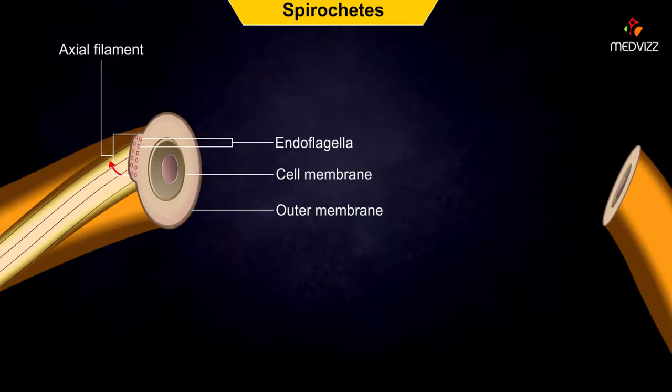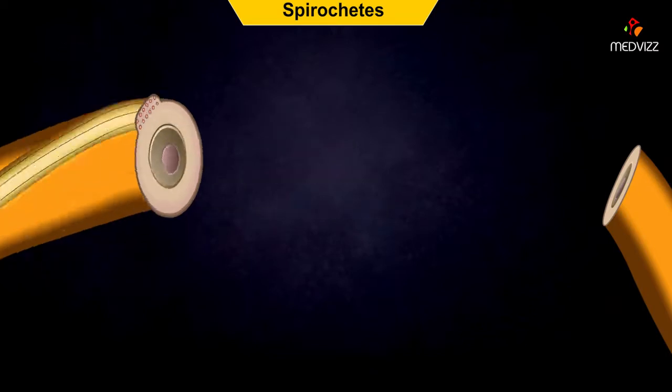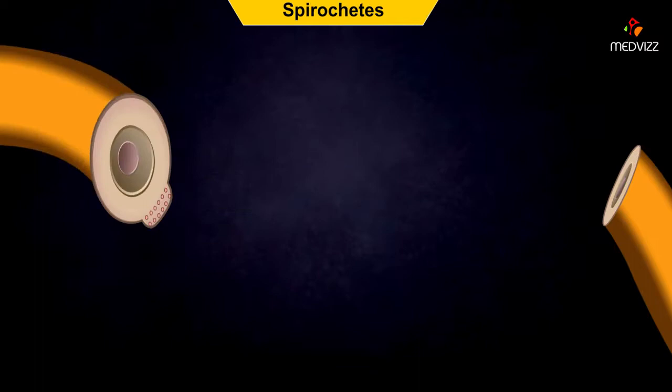Rotation of the endoflagella causes the axial filament to rotate around the bacterium, which causes the spirochete to corkscrew through its medium.